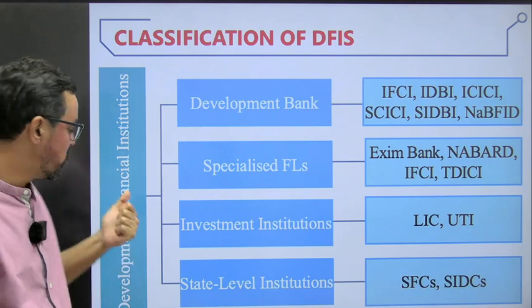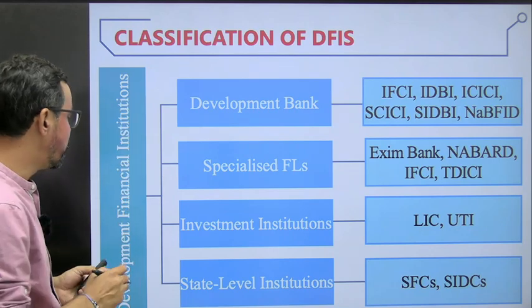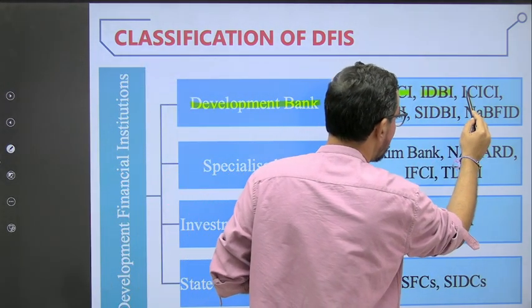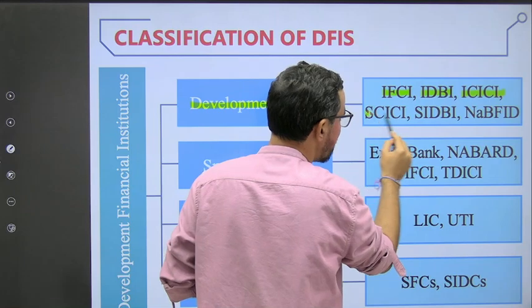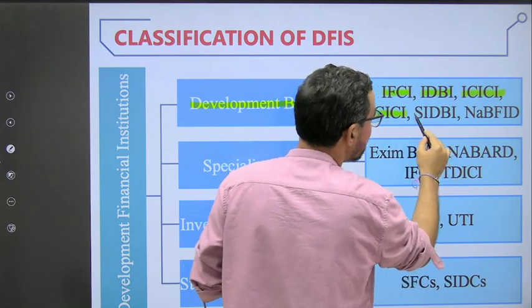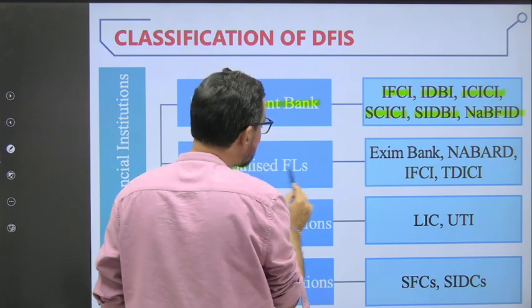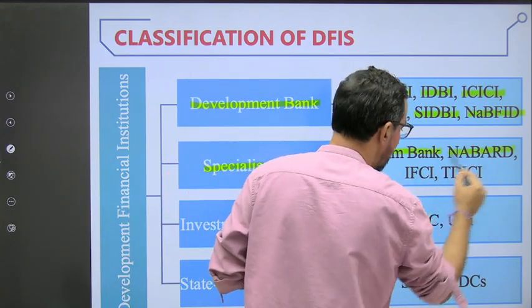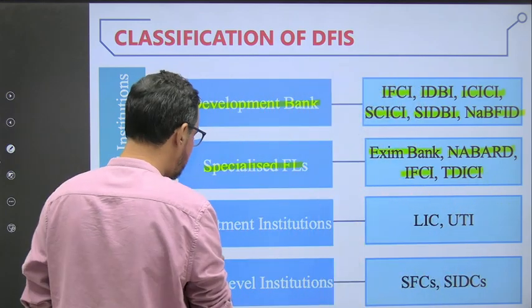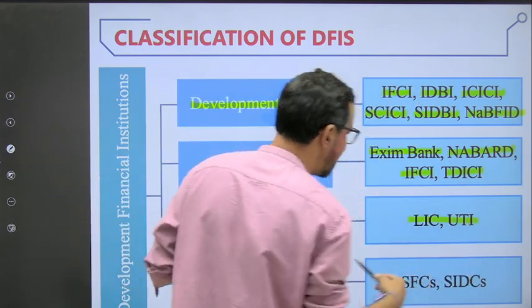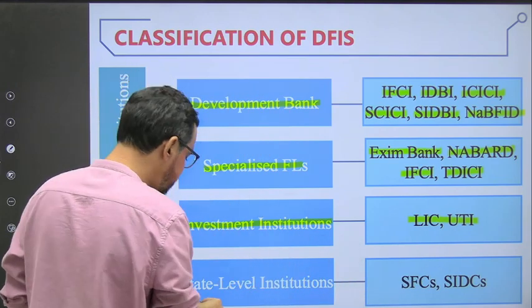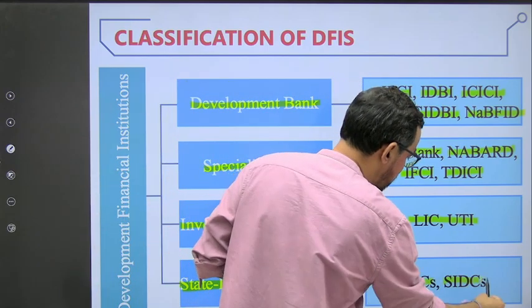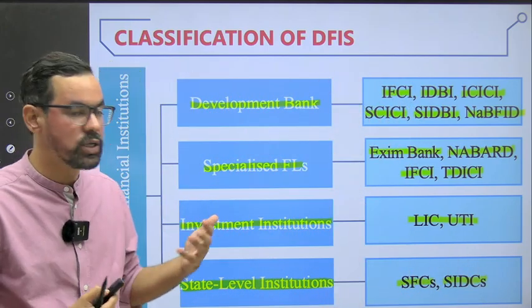If we do the classification of DFIs, we have Development Banks: IFCI, IDBI, ICICI, SIDBI, and NaBFID. Then we have Specialized Banks for financial lending: EXIM Bank and NABARD. Then Investment Institutions like LIC and UTI - Unit Trust of India. And State Level Institutions including State Finance Corporations and SIDCs. All of these fall under the DFI categorization.